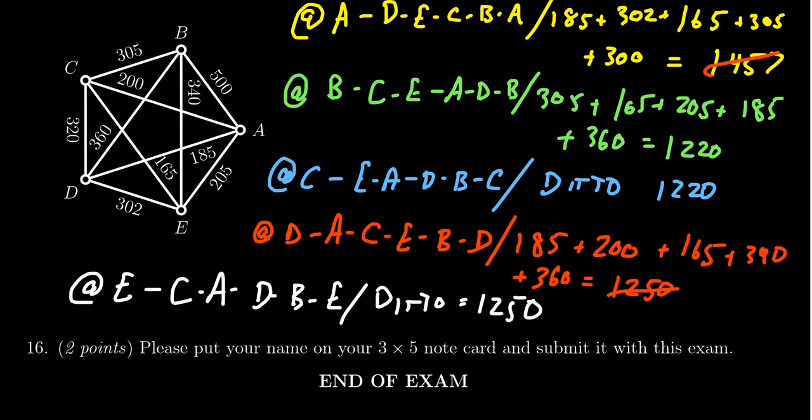That costs 1250 again. So the best answer is to start at B or C, and the sub-optimal tour we got was 1220.